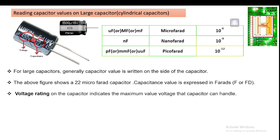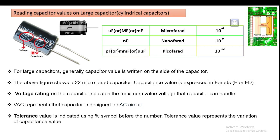VAC indicates the capacitor is designed only for AC circuits. If it is marked 450 VAC, it is defined only for AC circuits. The tolerance value indicates the variation of the capacitance. For example, another capacitor is written as 1500 microfarad, 16 volt, with PWM — this indicates the tolerance of the capacitor, which we will see in the next slide.